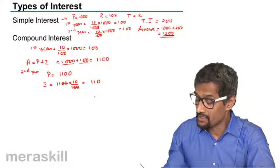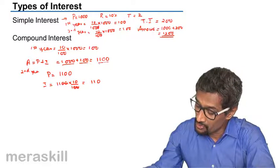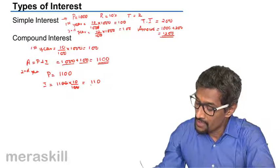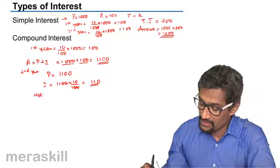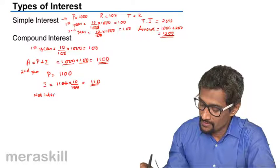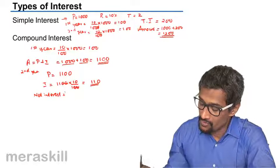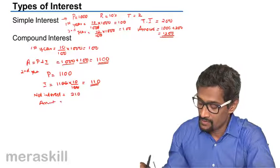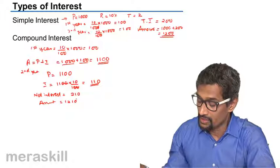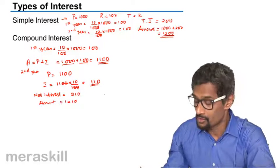So net, what are you getting? You are getting 100 rupees interest in the first year plus this 110, so the net interest is going to be 210. Hence the amount is 1210: 1000 plus 210.